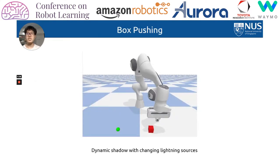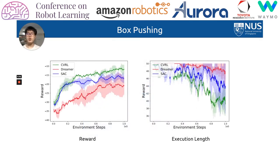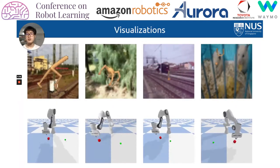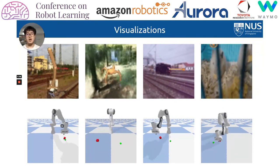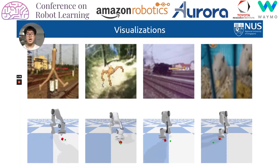We also evaluate CBRL on box-pushing tasks with a simulated robot, where the challenge is the dynamic shadow cast by the robot arm and self-occlusion. CBRL learns faster compared to the other two baselines and achieves a higher reward with a shorter execution length. These visualizations show that CBRL successfully handles all tasks.